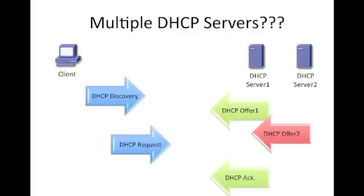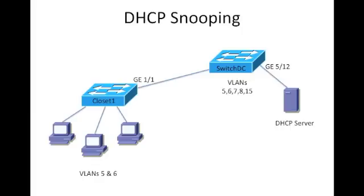So what we want to do is try and mitigate that. Let's pretend this is what we have for a network. We have two different switches on our data center switch which we call Switch DC. We have a DHCP server installed on GigE 512. On our closet switch, we have multiple PCs sitting in VLANs 5 and 6, and we have an uplink port back to Switch DC on GigE 11, which happens to be a trunk. Switch DC also happens to have multiple VLANs.